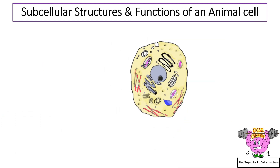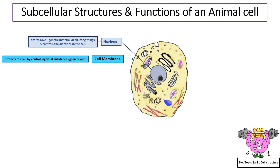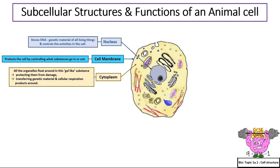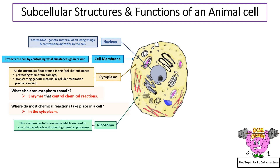The subcellular structures and functions of an animal cell. What is the function of a nucleus? It stores the genetic material and controls the activity in the cell. What is the function of a cell membrane? It protects the cell by controlling what substances go in and out. What is the function of cytoplasm? All the organelles float around in this gel-like substance, protecting them from damage and transferring genetic material and cellular respiration products around. What is the function of a ribosome? Ribosomes make proteins, which are used to repair damaged cells and directing chemical processes.